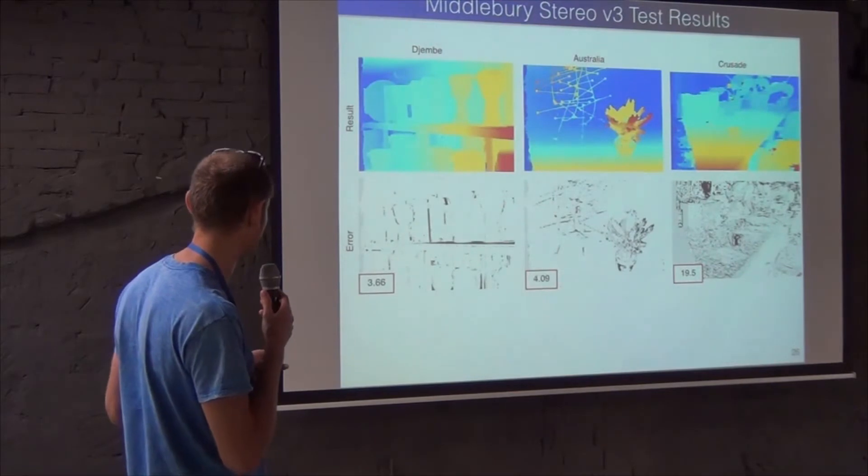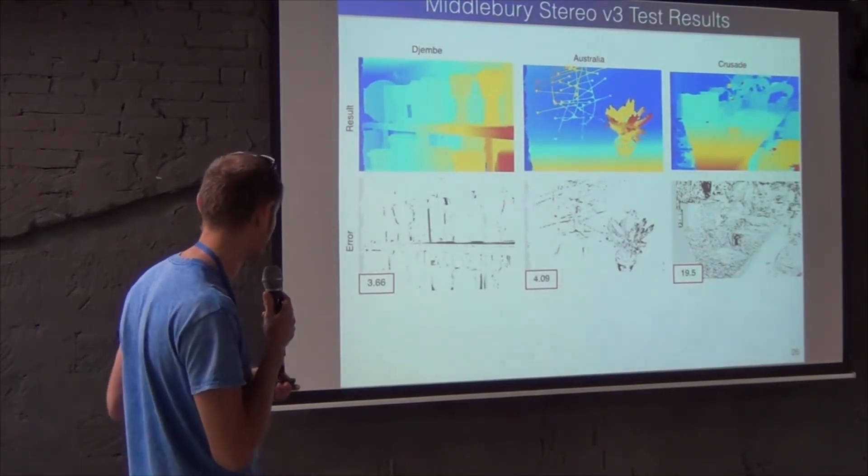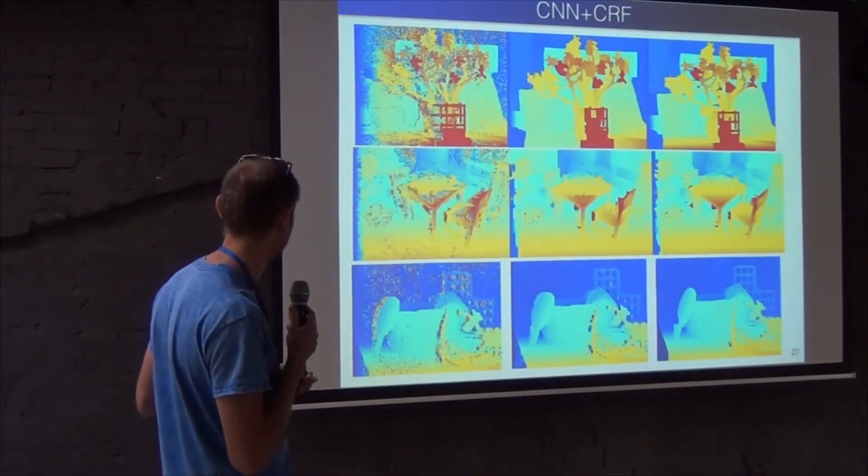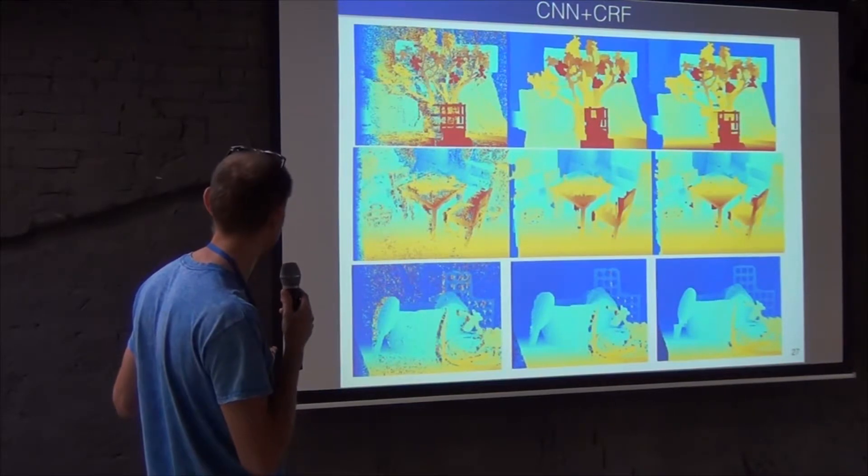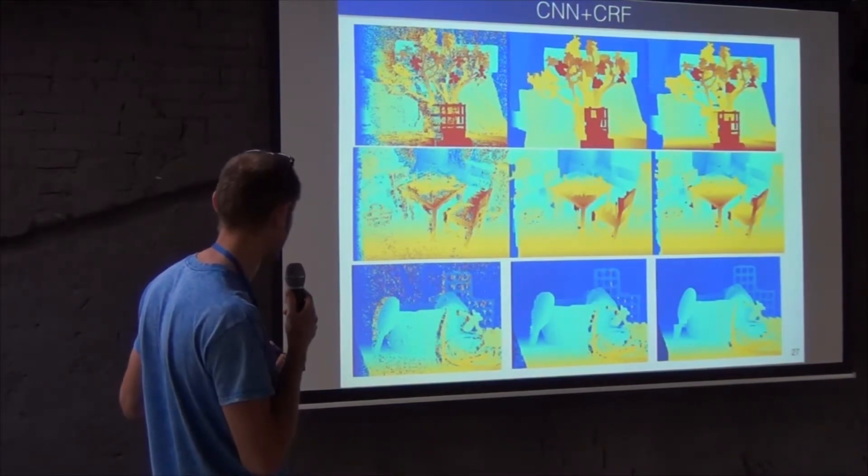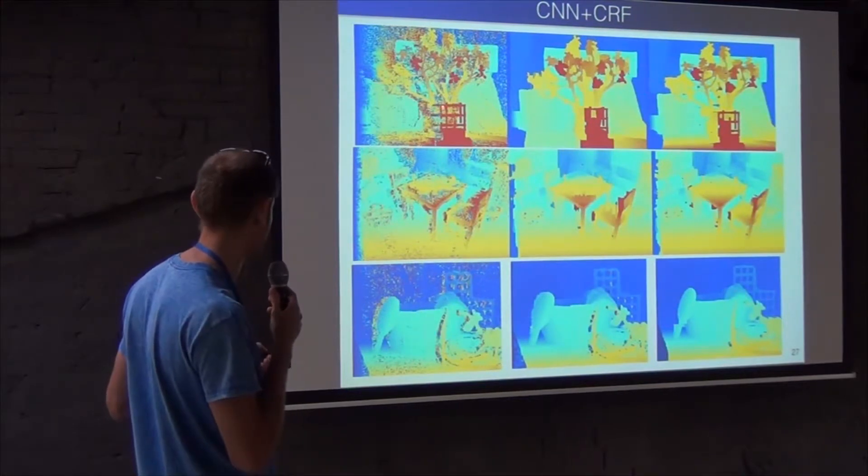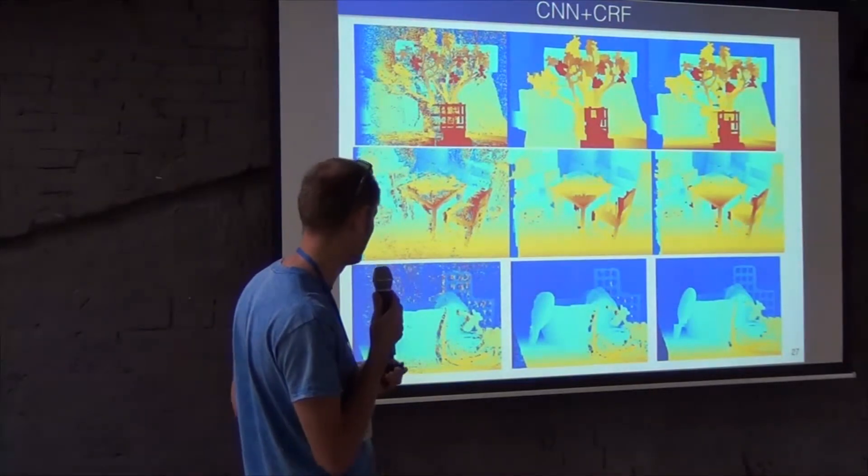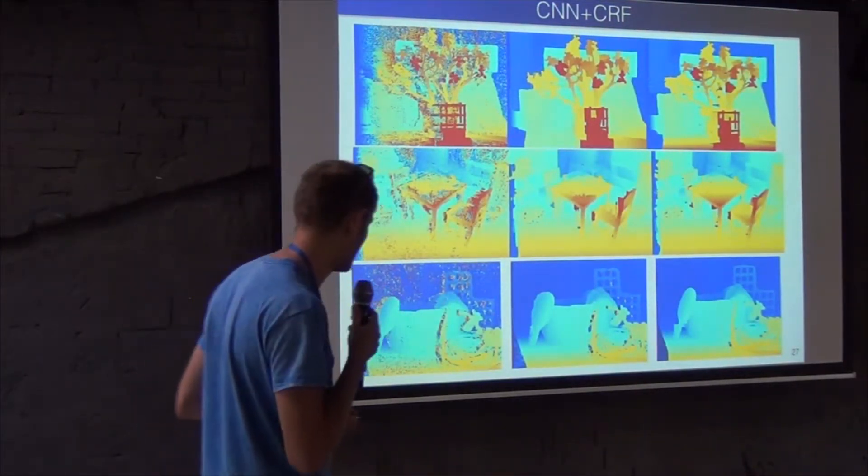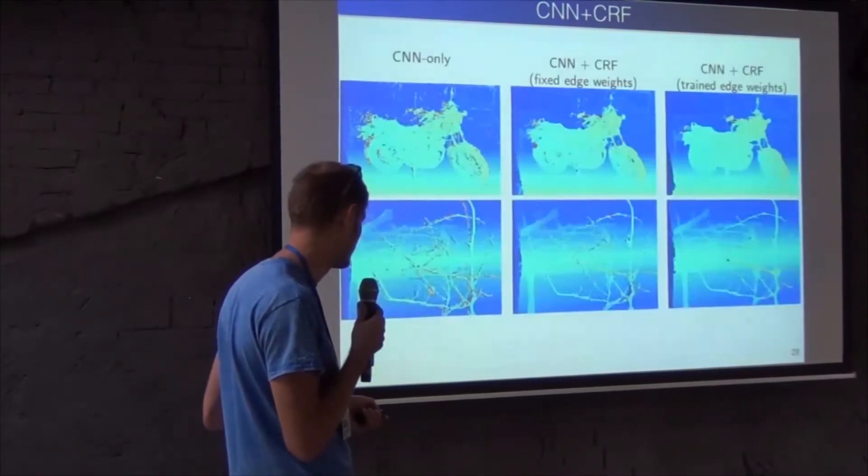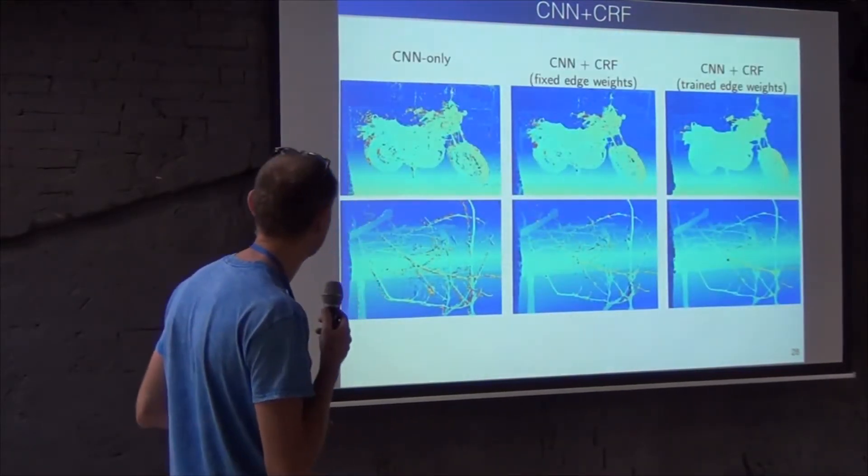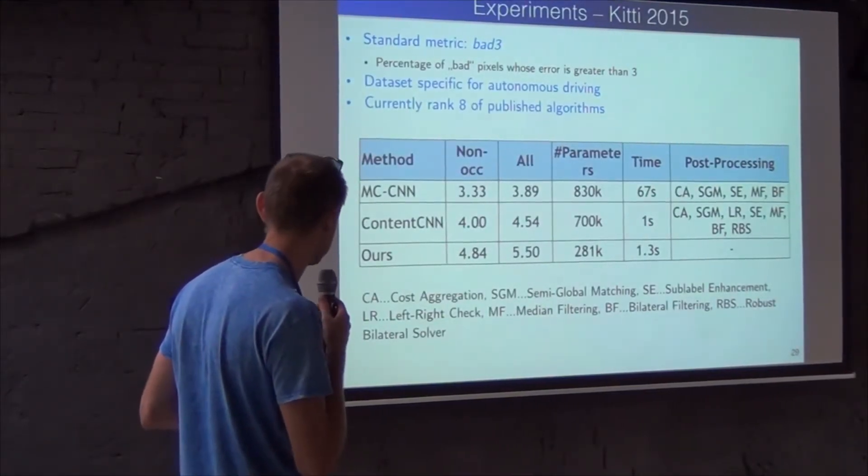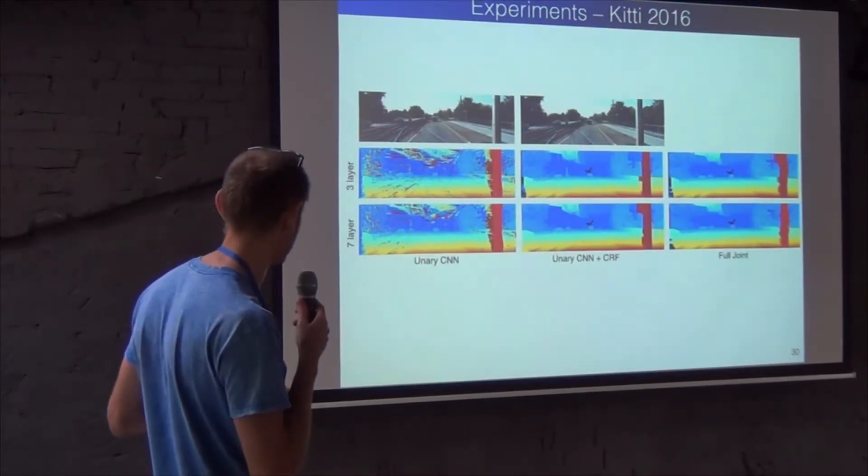So more examples for the reconstruction on some more challenging images. This is CNN only, now with CRF, and now jointly trained. So in these cases, we see that the joint training also improves the results. This is the next test for the car driving scenario. It also has a stereo camera on the car. And now it's not controlled laboratory environment, but this outdoor stuff.